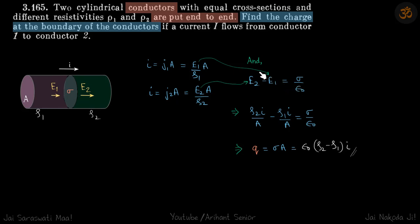And we put the values of E1 and E2 here, and we get our answer, which is Q is equal to sigma, I is equal to epsilon 0 Rho2 minus Rho1 times I.